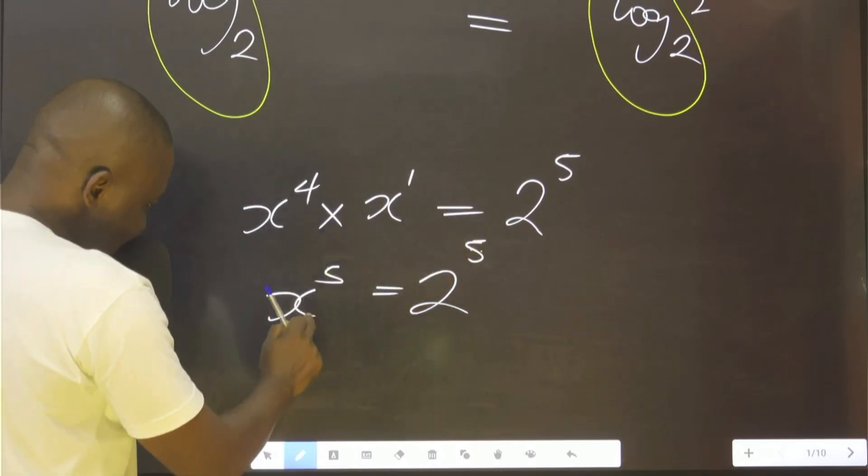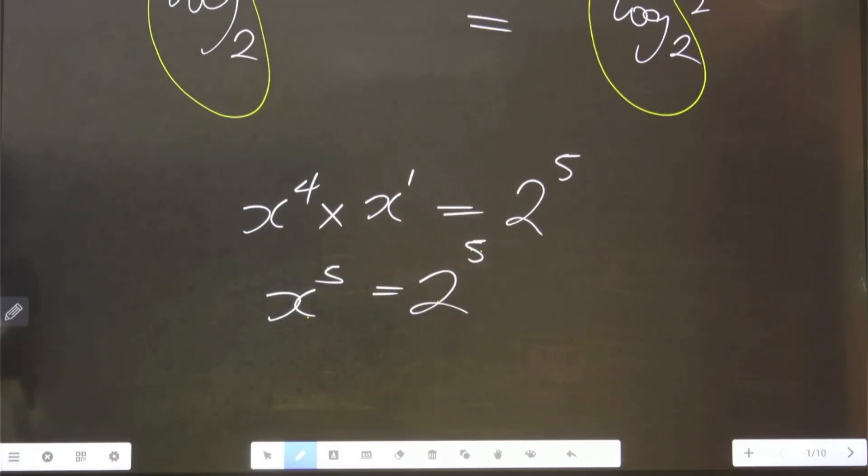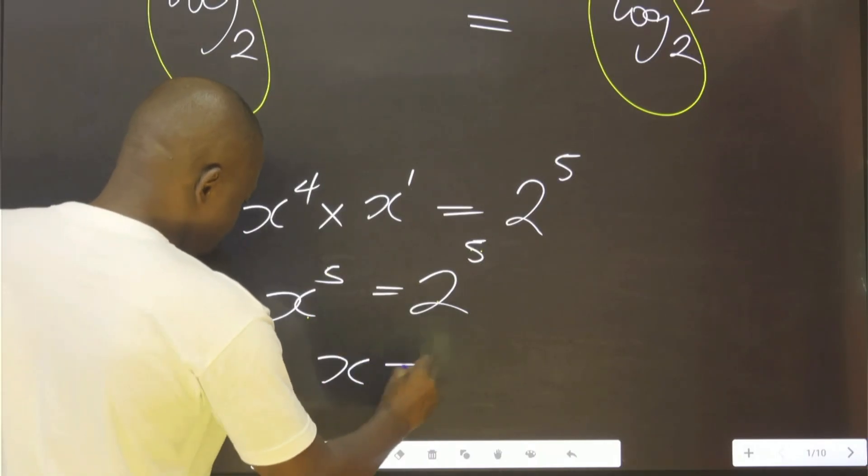Definitely these and these are also equal. It means therefore x is equal to 2. So x therefore is equal to 2. So this is the answer.